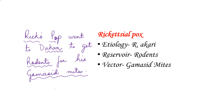The next mnemonic is: 'Rick's pop went to Dakar to get rodents for his gammacid mites.' Rick's pop refers to rickettsial pox. The etiological agent is Rickettsia akari — remembered by 'Dakar,' the capital of Senegal in Africa. The reservoir is rodents and the vector is gammacid mites.